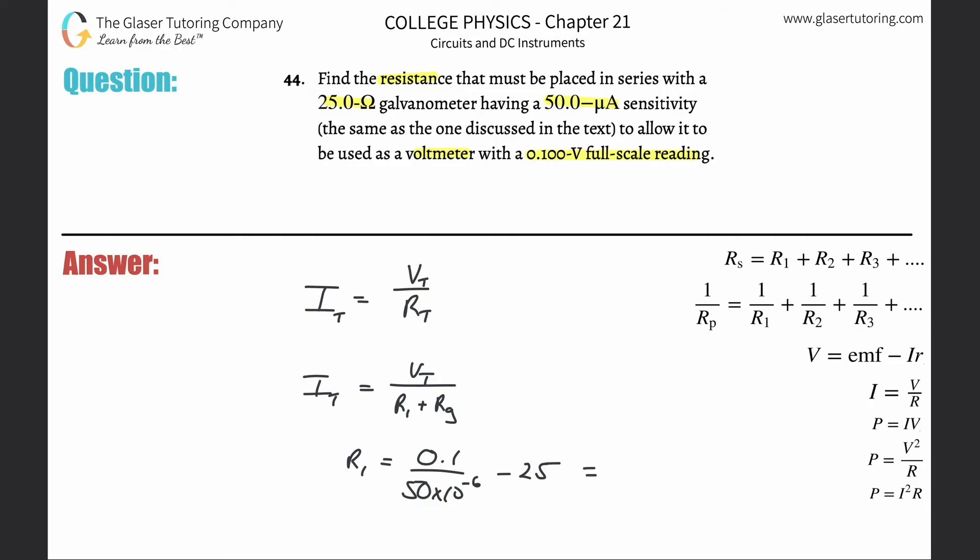And here we go, we're going to get 1975, so it's going to be 1.98 times 10 to the third, and that will be in terms of ohms.